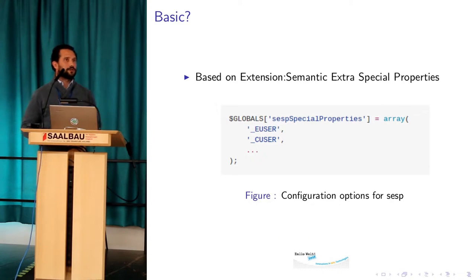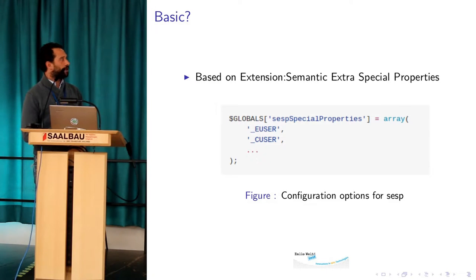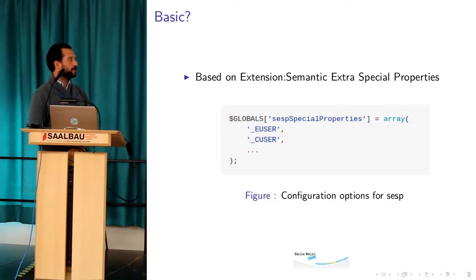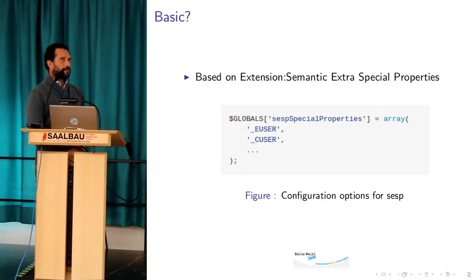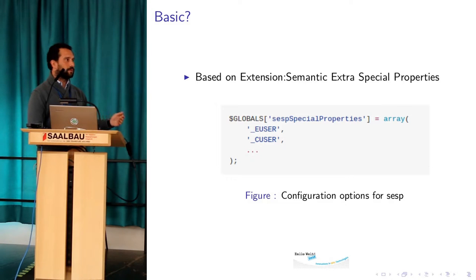Many of you I think know already the available semantic extra special properties extension and it's pretty cool — it's working and everyone can select which property to use in local settings. But it's very limited: if you have your own extensions with available data you have no way to extend it and input your own data.